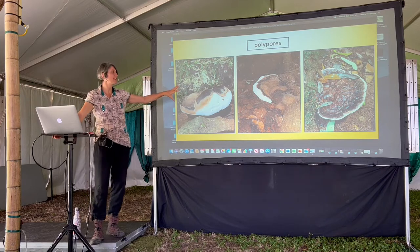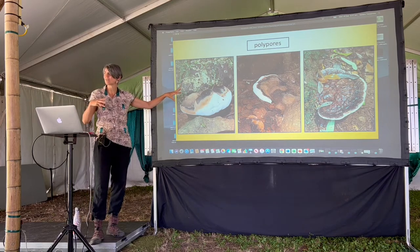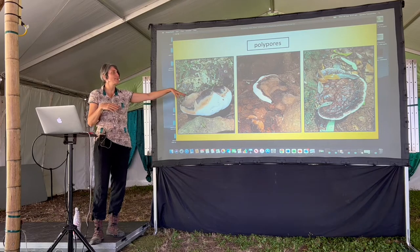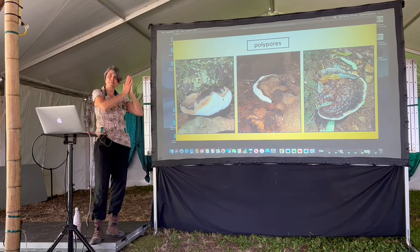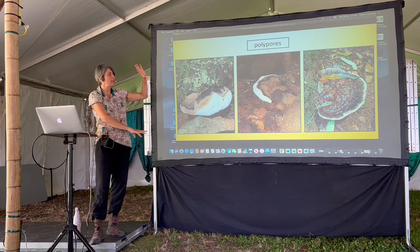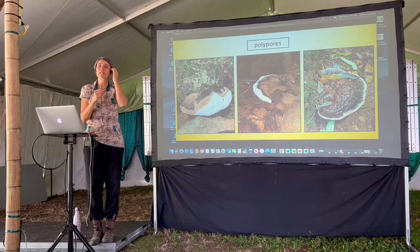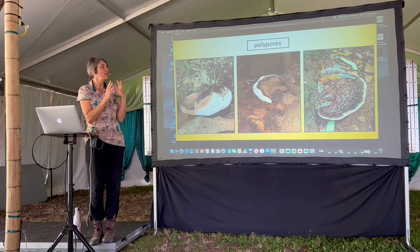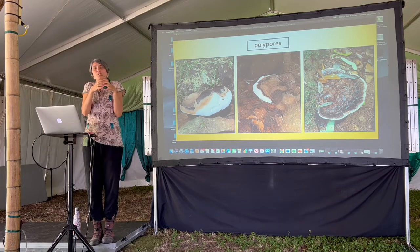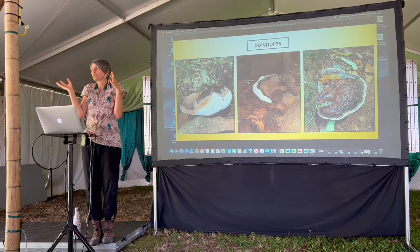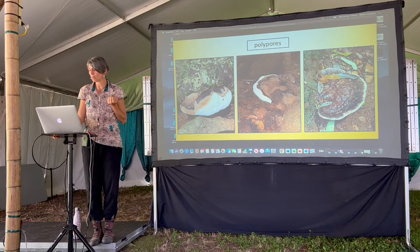Then you've got polypores like Ganoderma — the really hardy stuff that you can build structures and grow materials from. People are actually using these now. The mycelium proliferates through wood or paper or any substrate, and it will decompose it while gluing it all together. So you can make bricks and buildings — they're called myco-materials.